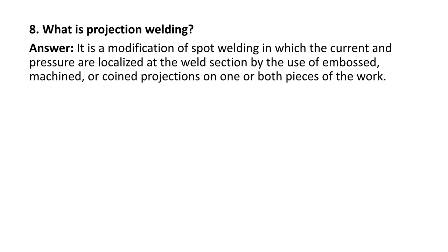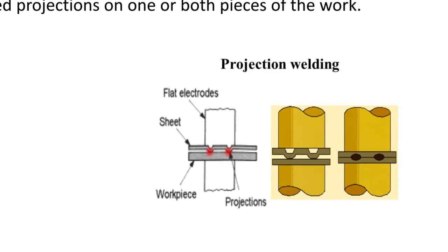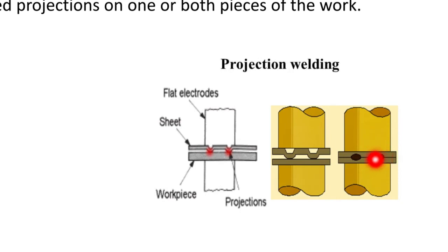Next question: what is projection welding? It is a modification of spot welding in which the current and pressure are localized at the weld section by the use of embossed, machined, or coined projections on one or both pieces of work. Here you can see the schematic of projection welding.